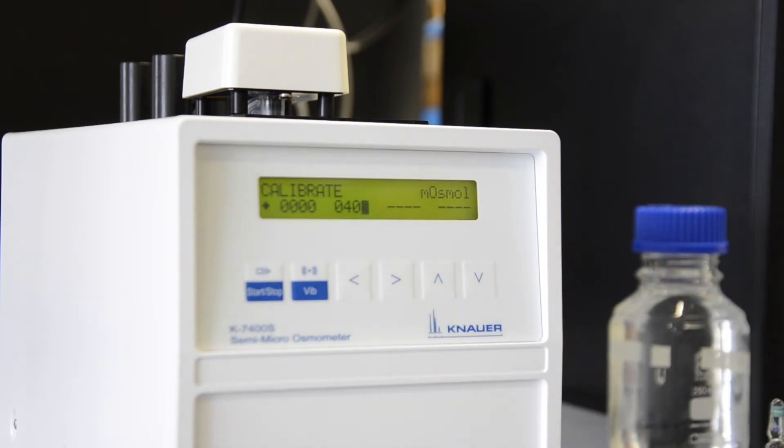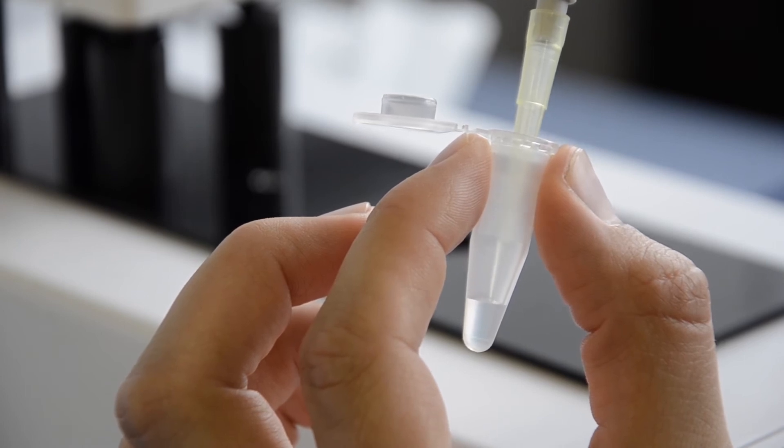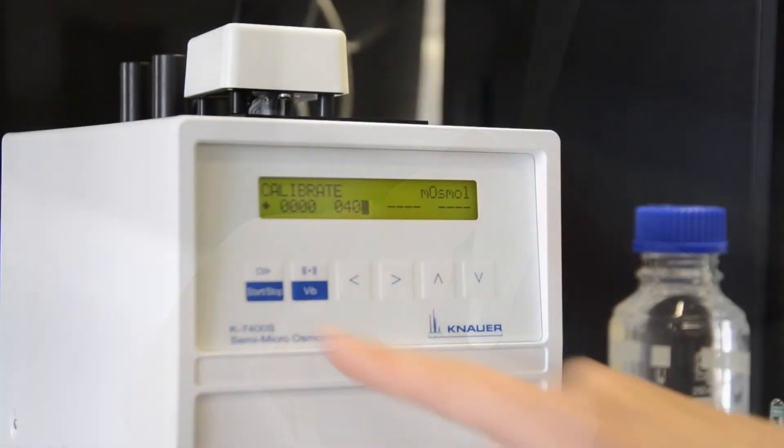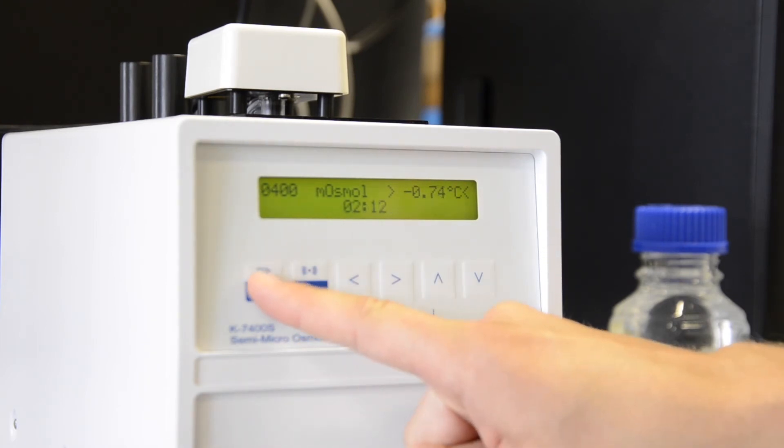Use the respective osmolality standard and fill the sample tube with the same volume as used in the previous calibration step. After the calibration is finished press again the start button to confirm the calibration.